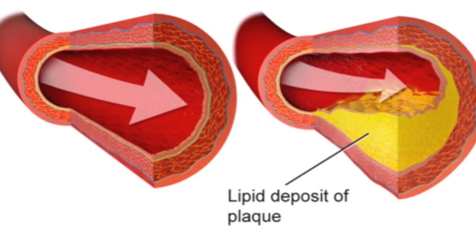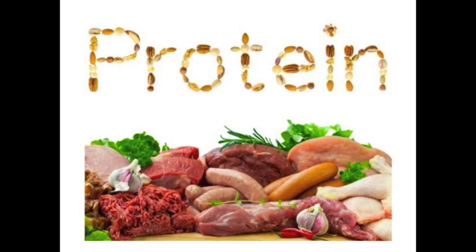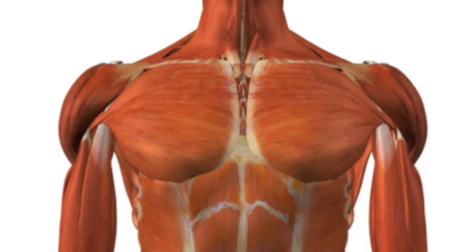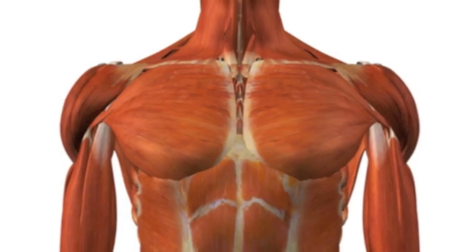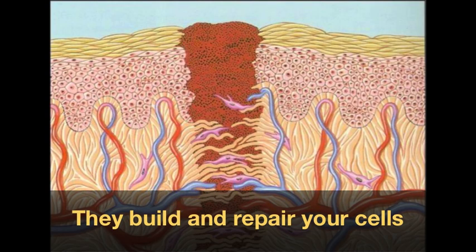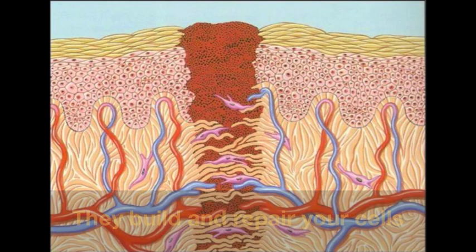And then you can die from heart disease. Last, there's proteins — they have so many jobs, do so many things. You need them for muscle development, so if you want to get big, you need to eat meat. Build and repair your cells.